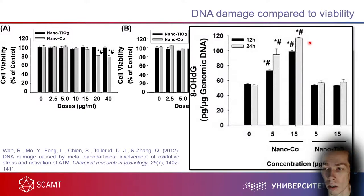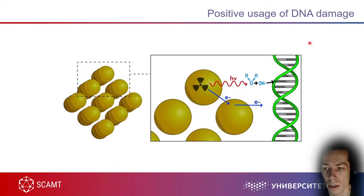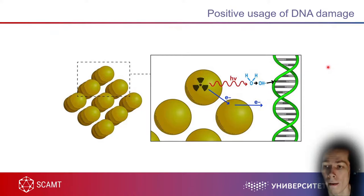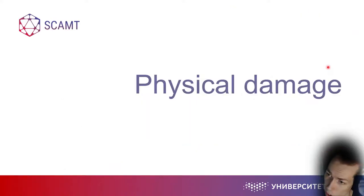Another DNA damage detection method shows a key product of DNA damage quantifiable by staining — the more product, the more damage. TiO₂ again shows no significant increase at 12 or 24 hours, but cobalt particles show more than twice the increase, propagating slightly more after an additional 12 hours — clear signs of genotoxicity. Importantly, some damage can be beneficial — for example, gold nanoparticles producing photons that cause DNA oxidation can eliminate bacteria or viruses, so damage is sometimes needed for proper nanoformulation function.